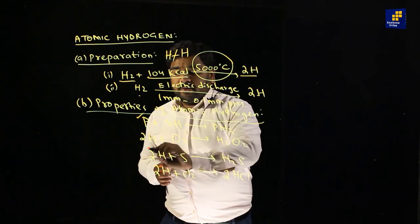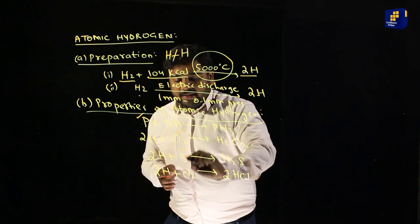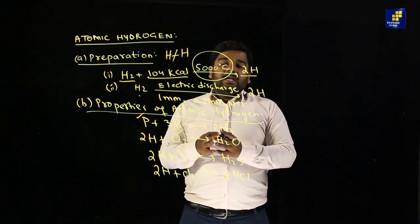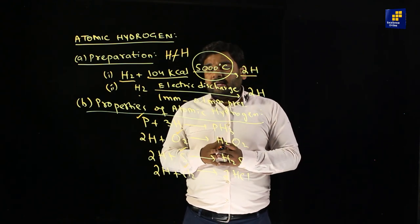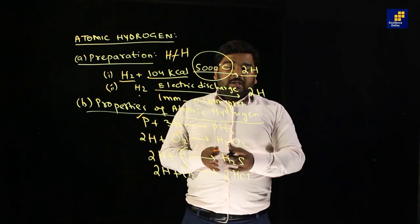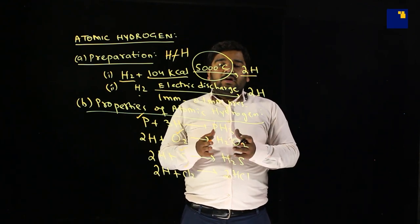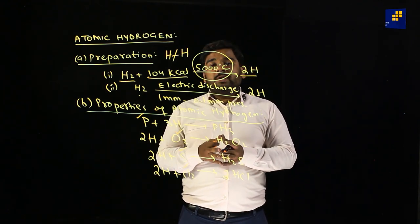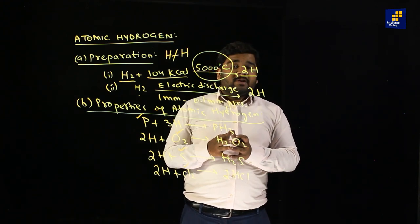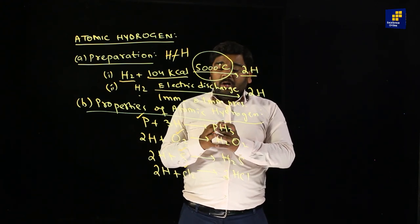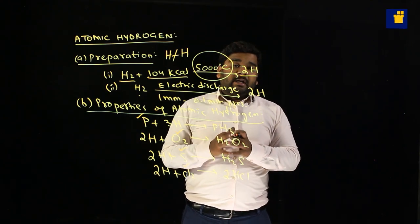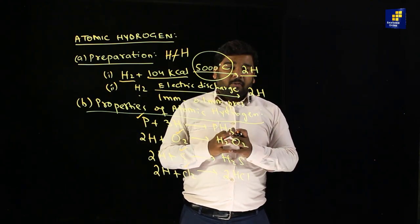Atomic hydrogen reacts with phosphorus, oxygen, sulfur, and chlorine. With phosphorus, PH3 forms. With oxygen, H2O2, hydrogen peroxide, is formed. With sulfur, H2S forms. With chlorine, HCl — hydrochloric acid — forms.